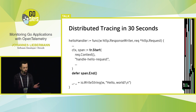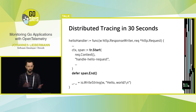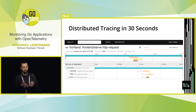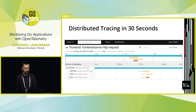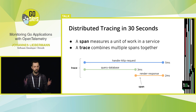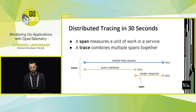You instrument your application by importing some library into your code. The library gathers data about what's going on inside your application, ships this data to some tracing backend, and you get fancy graphs which allow you to get both a high-level and a deep-down view for every transaction handled by your application, no matter how many services are involved. A span measures a unit of work within a service, and a trace is a collection of spans with parent-child relationships between them. That's basically distributed tracing.